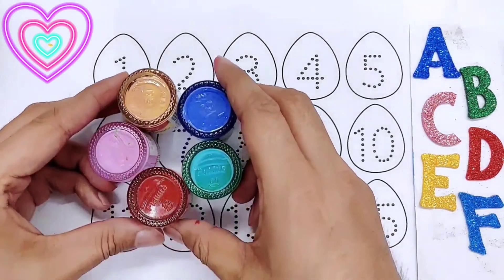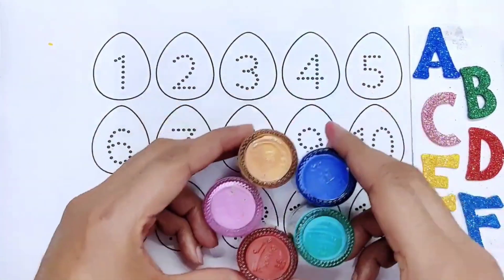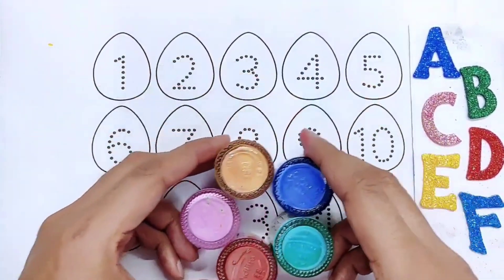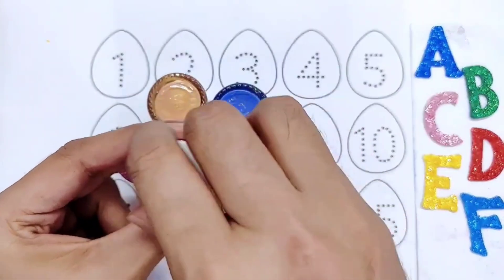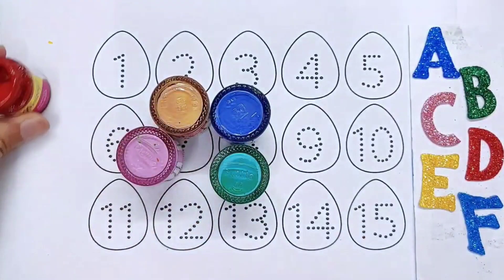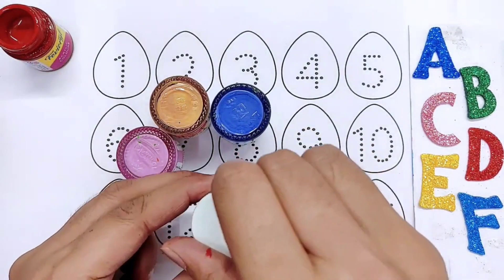Kids, this is colors. Let's learn some color names. It's red color, red color. It's green color, green color.